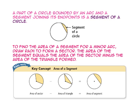A segment of a circle is a region bounded by an arc and the segment joining its endpoints. To find the area of a segment for a minor arc, draw radii to form a sector. The area of the segment equals the area of the sector minus the area of the triangle formed.